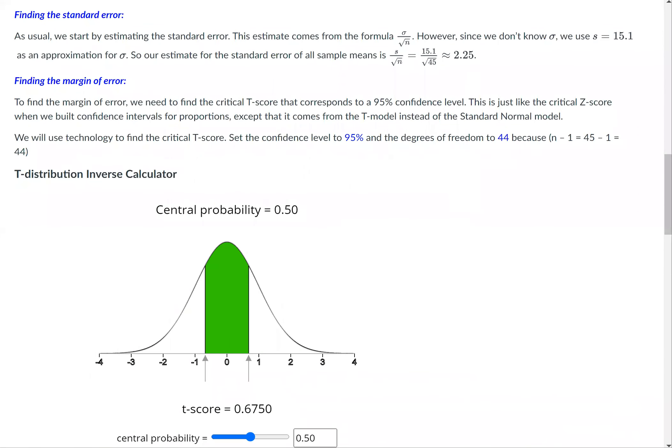Now we'll find the standard error. As usual, we start by estimating the standard error. The estimate comes from the formula σ over the square root of n. However, we don't know σ, so we use s equals 15.1. So instead of writing σ over the square root of n, we write s over the square root of n. That's 15.1 over the square root of 45, about 2.25.